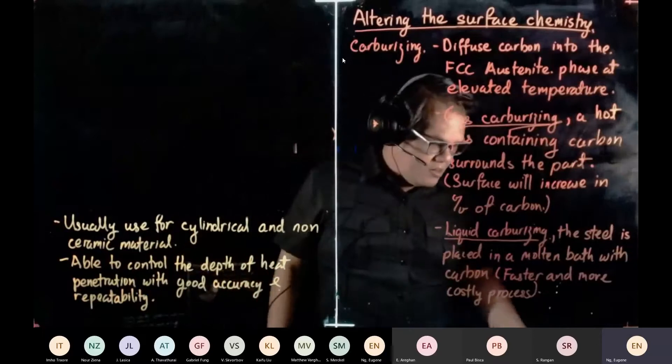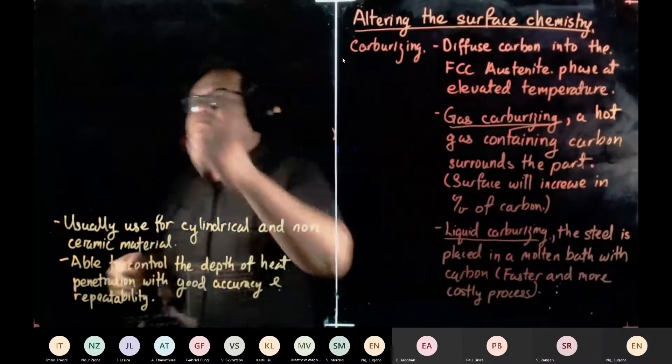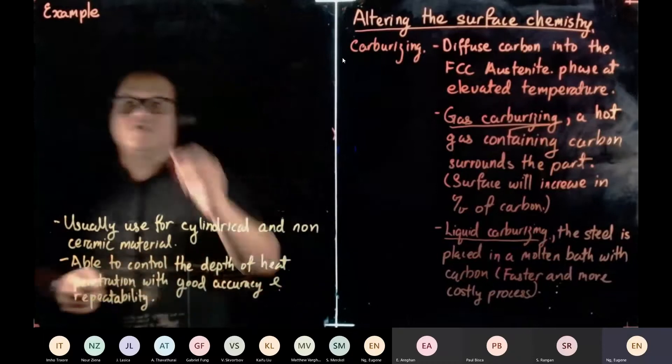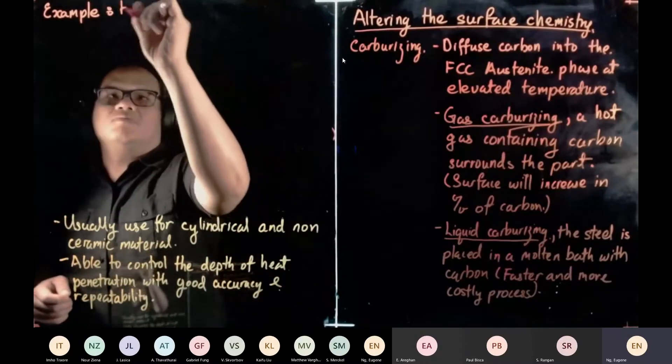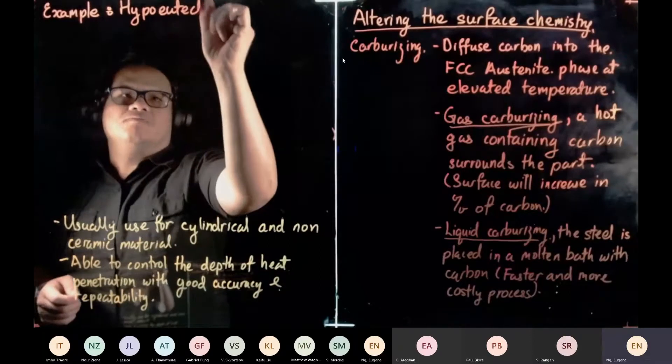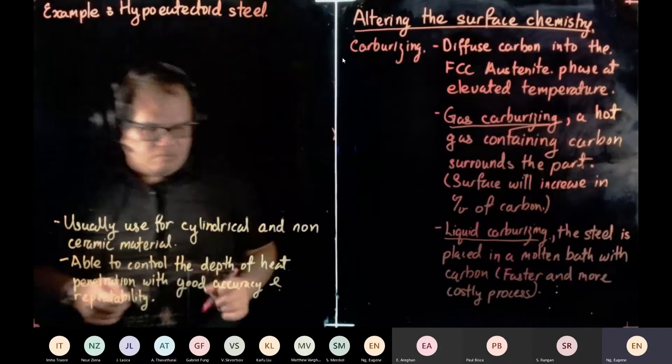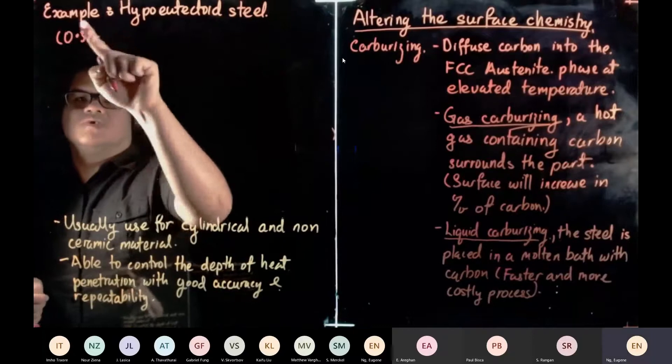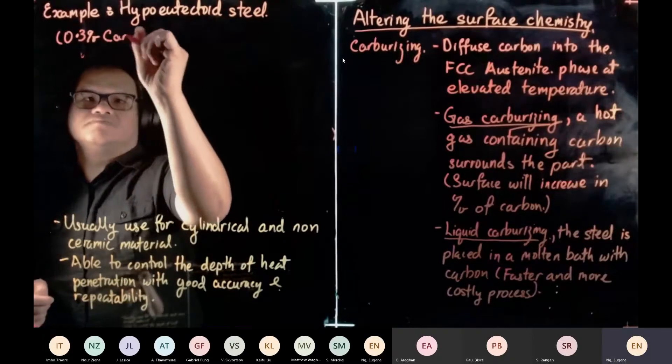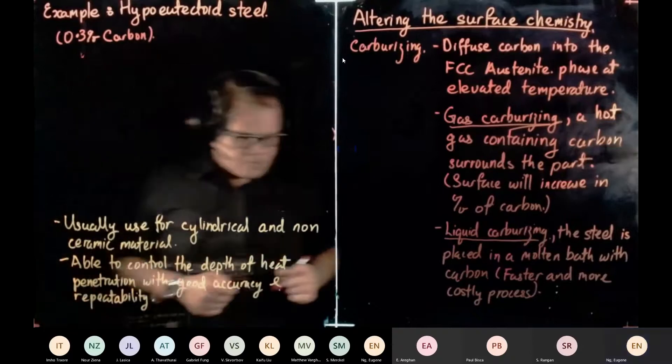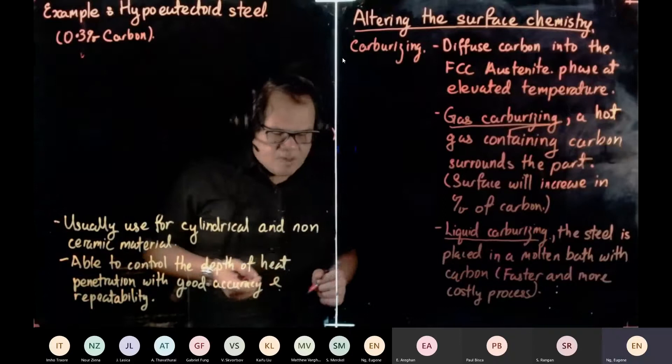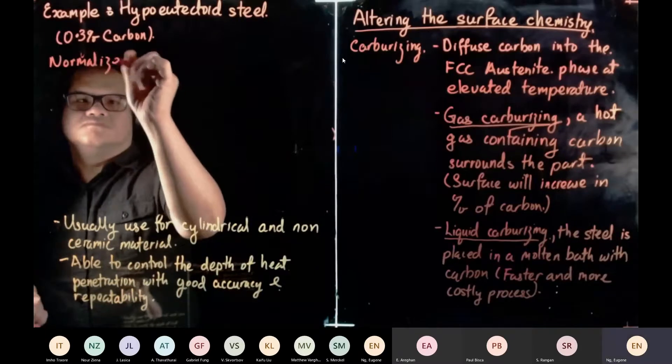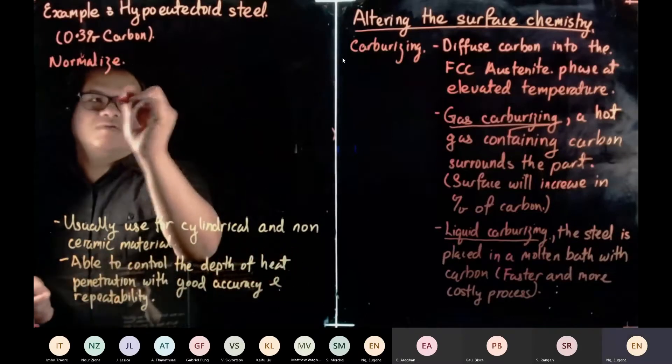So we're going to pick an example. We're going to pick an example of hypoeutectoid steel. So for this case, we are talking about 0.3%, 0.3% carbon. And then we see what. So if we have 0.3% carbon, if we normalize it, so what we get, because it's only 0.3.